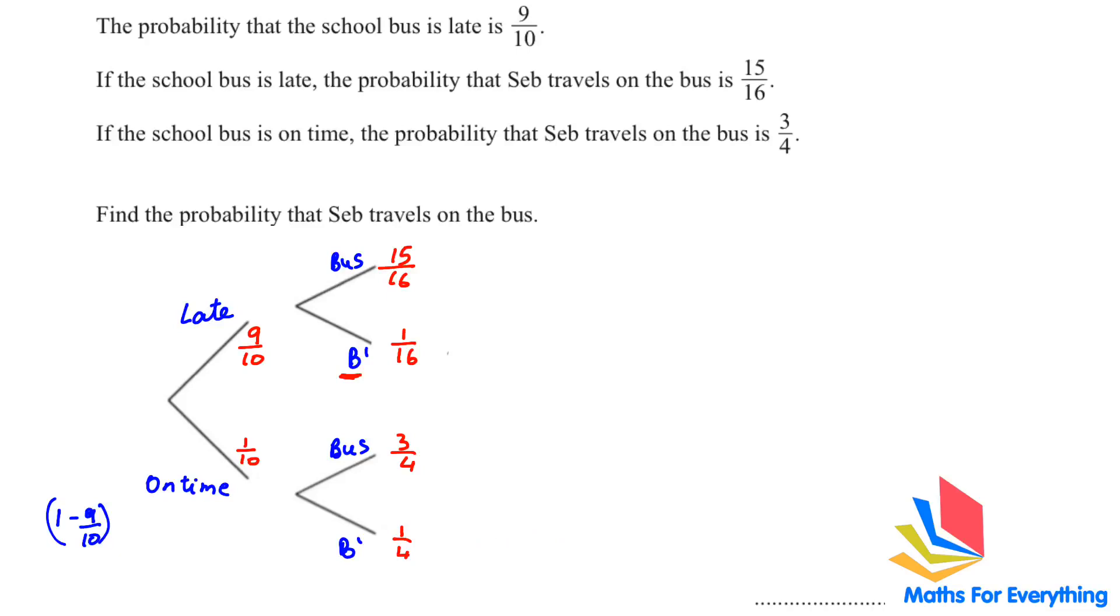And we need to find the probability that Seb travels on the bus. The probability that Seb travels on the bus is when it is late and he travels on the bus. So, you have late and goes on the bus. If you move to the branches this way, you multiply. And when you change the branch, you add. On time and he goes by bus. So, what is late? 9 over 10. Goes by bus, 15 over 16. On time is 1 over 10. And goes by bus, 3 over 4. So, this will give us 147 over 160.